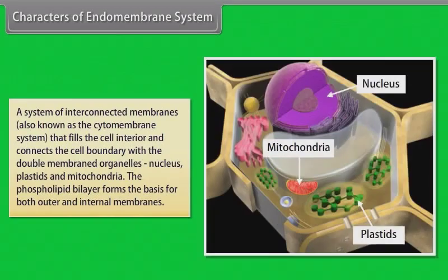The endomembrane system is a system of interconnected membranes, also known as the cytomembrane system, that fills the cell interior and connects the cell boundary with the double-membrane organelles — nucleus, plastids and mitochondria. The phospholipid bilayer forms the basis for both outer and internal membranes.